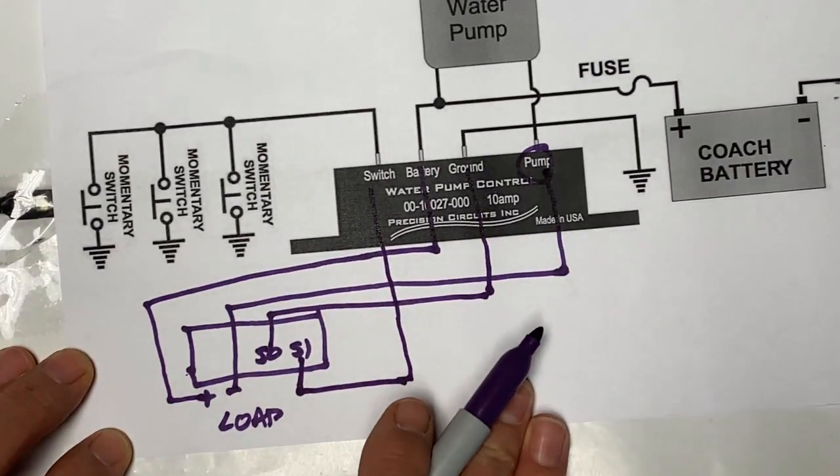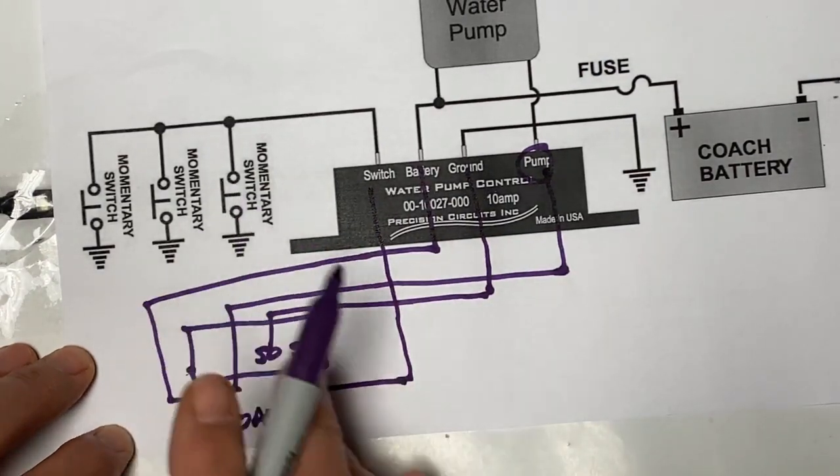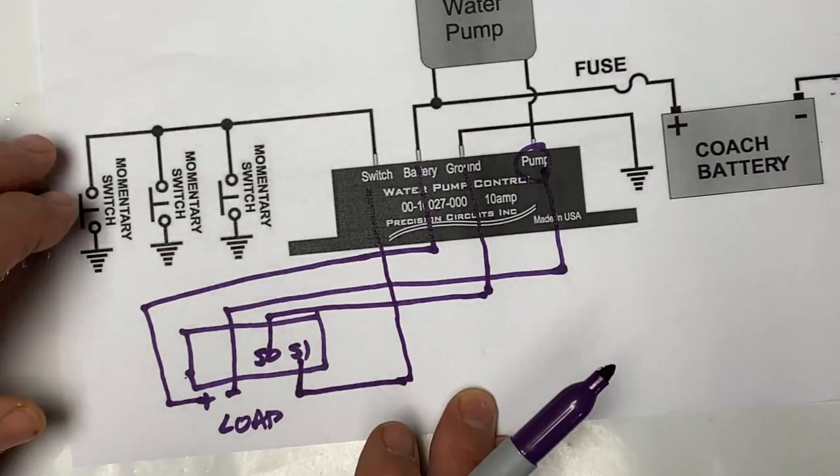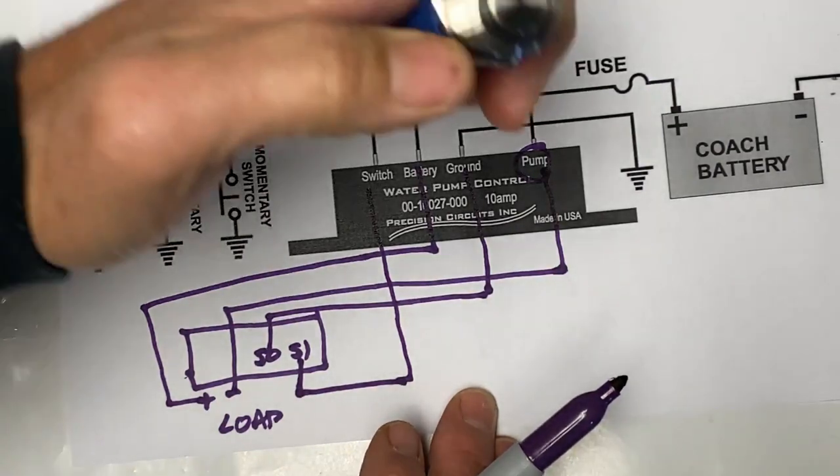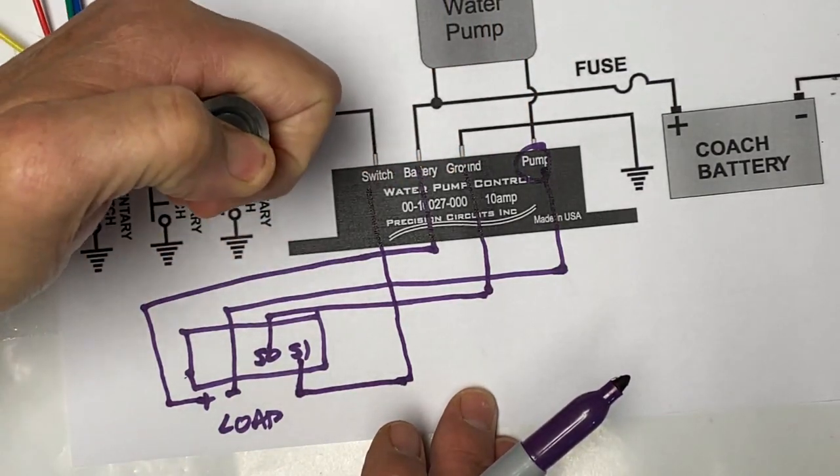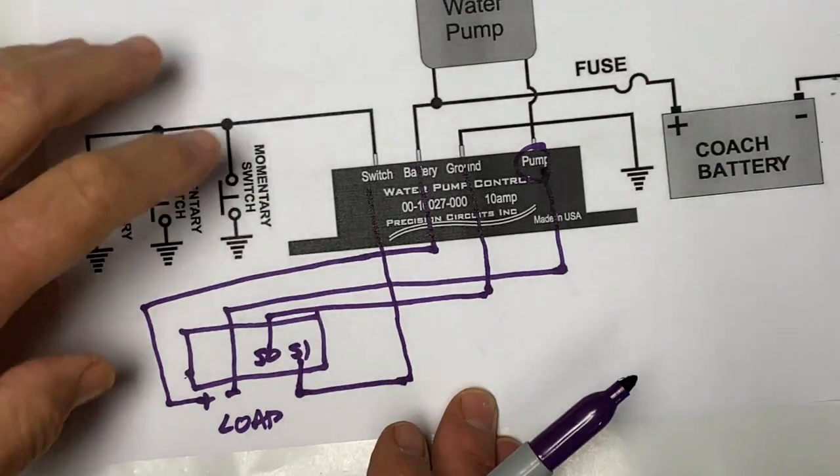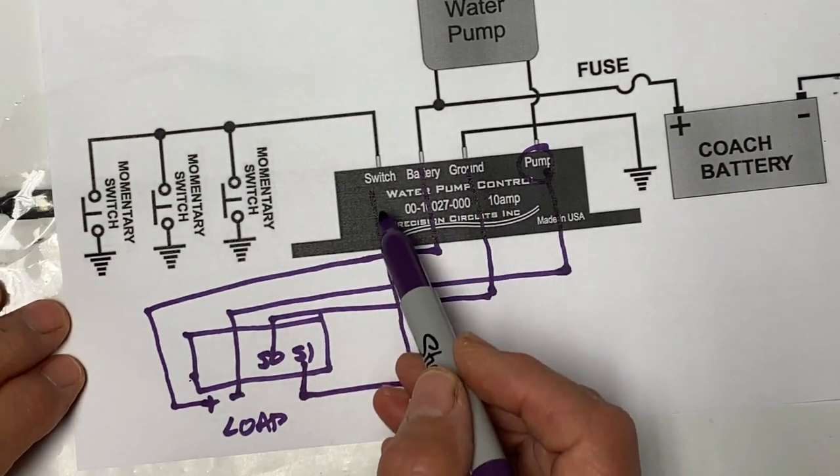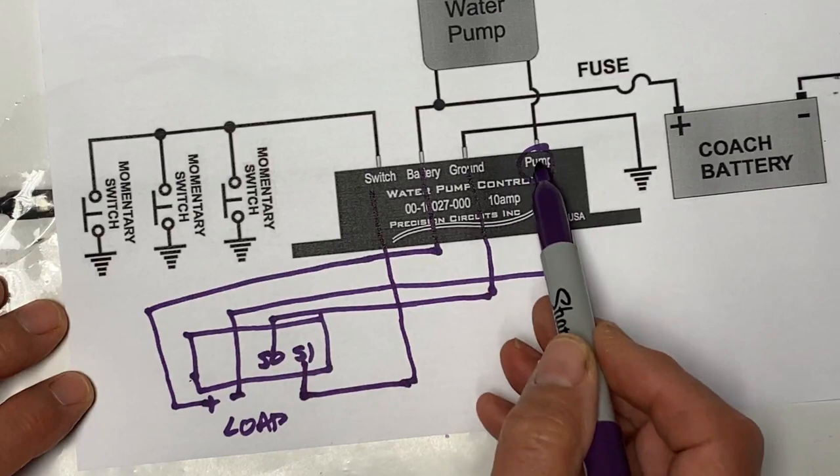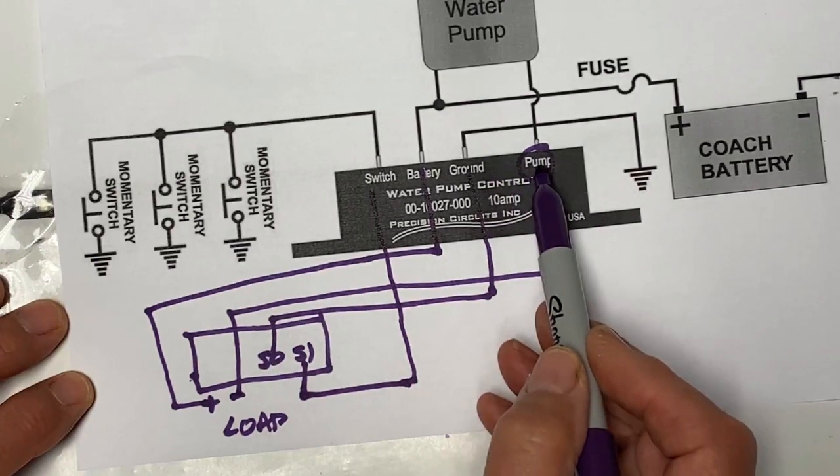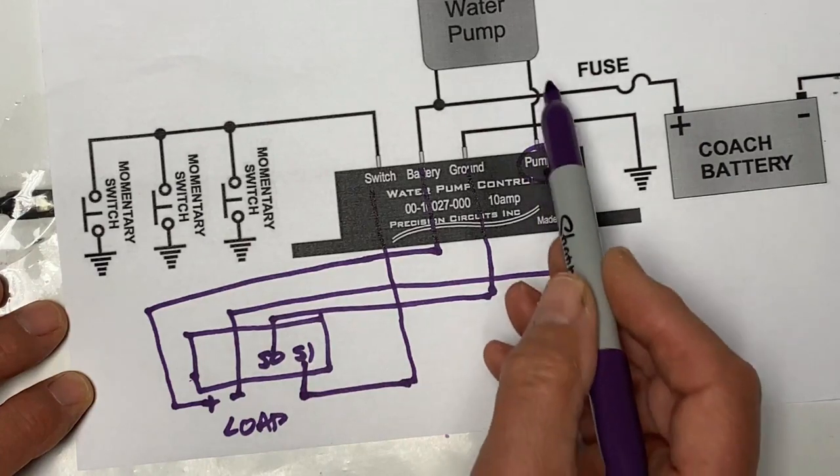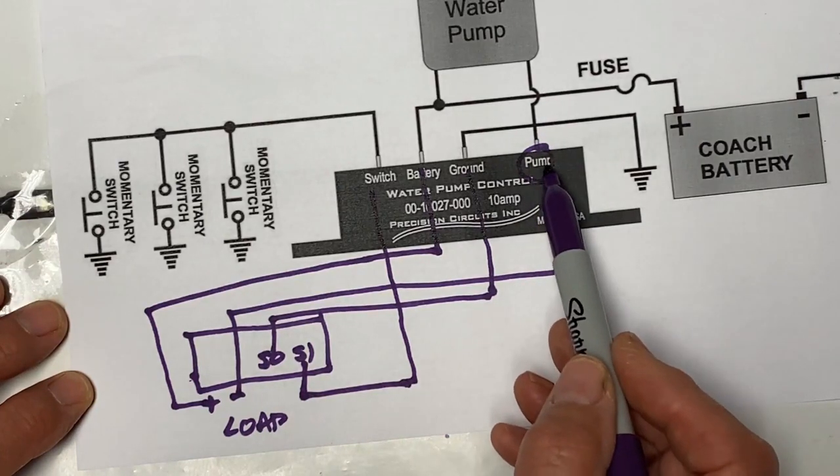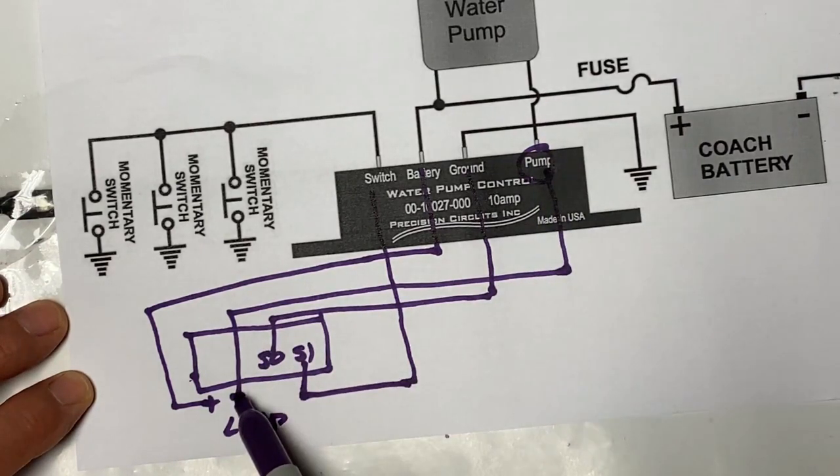So this is how it works. You have your momentary switch. You push the button on the momentary switch. This activates this relay. The load now is closed. The water pump turns on, the ring light on the auxiliary switch turns on, and the timer turns on.